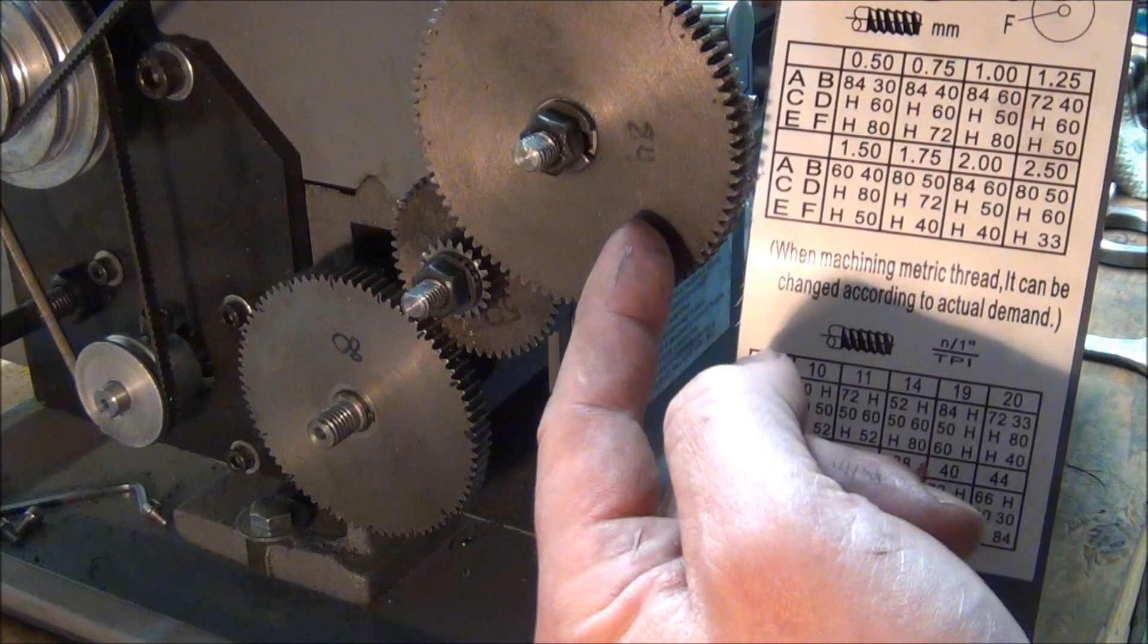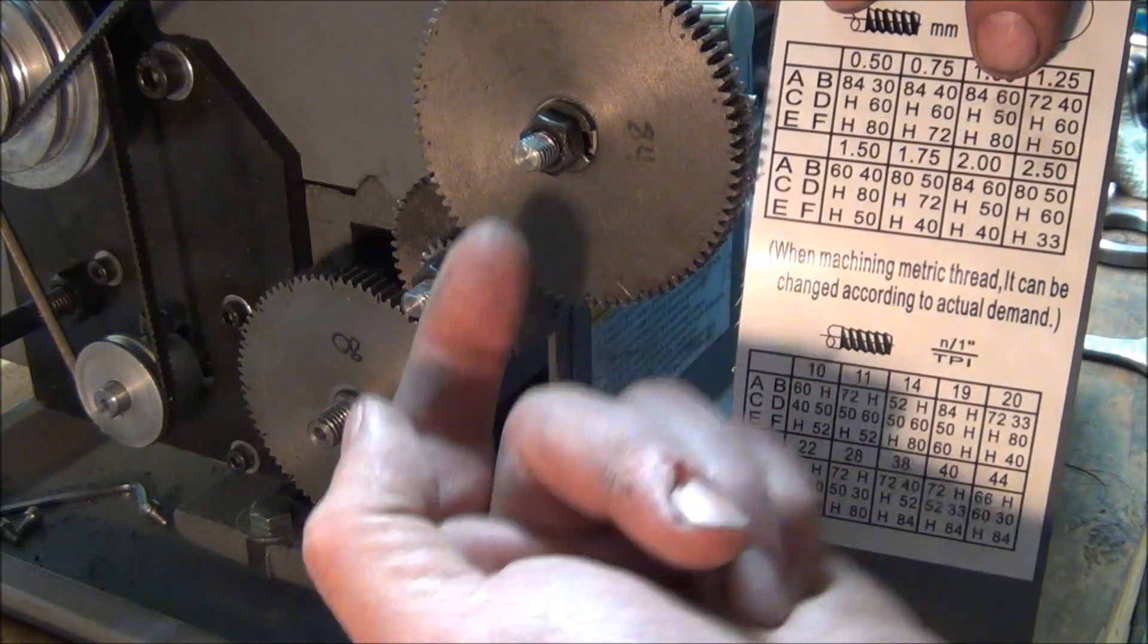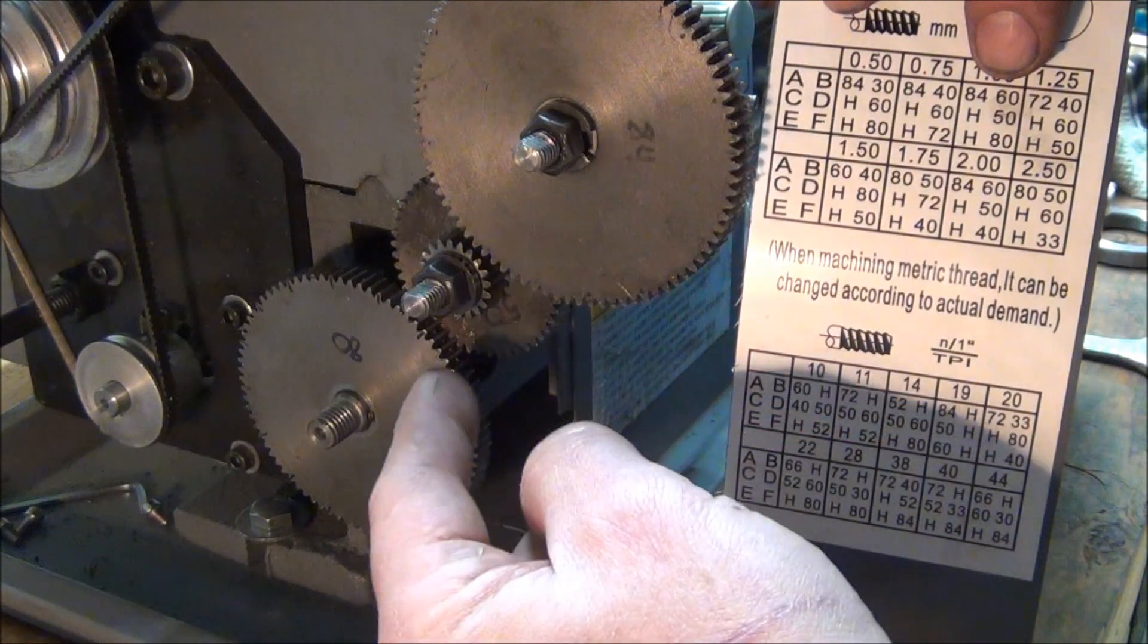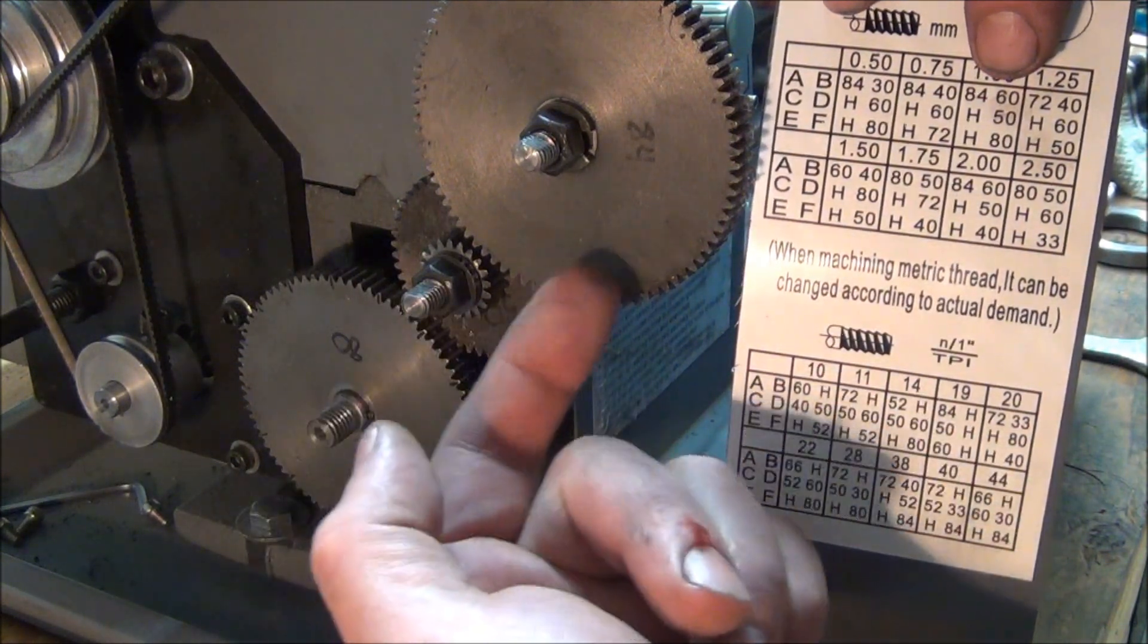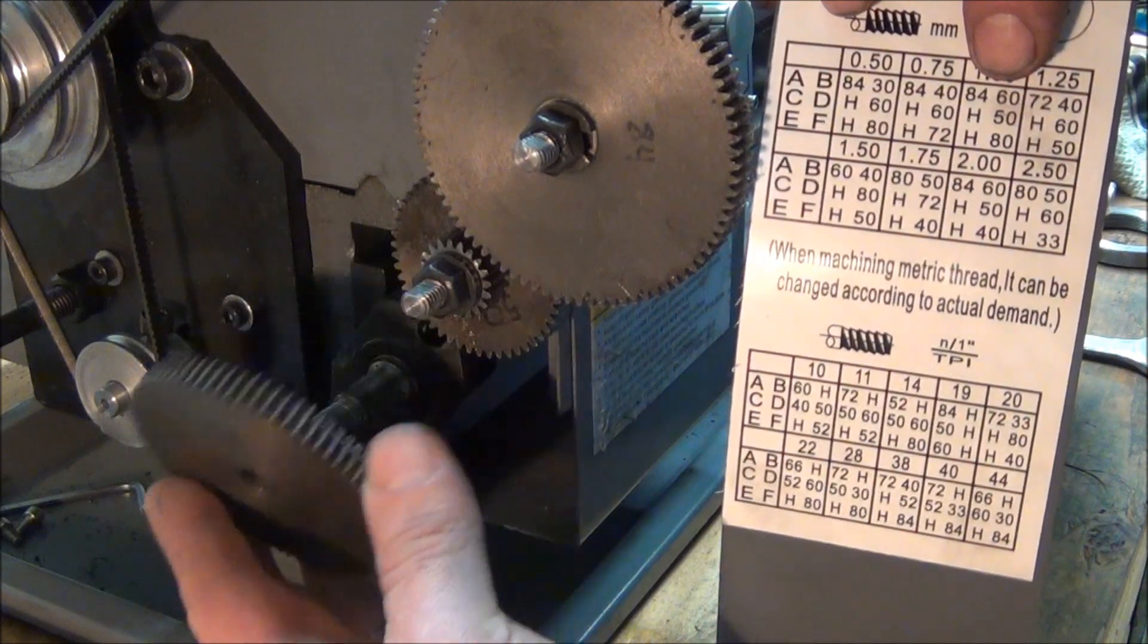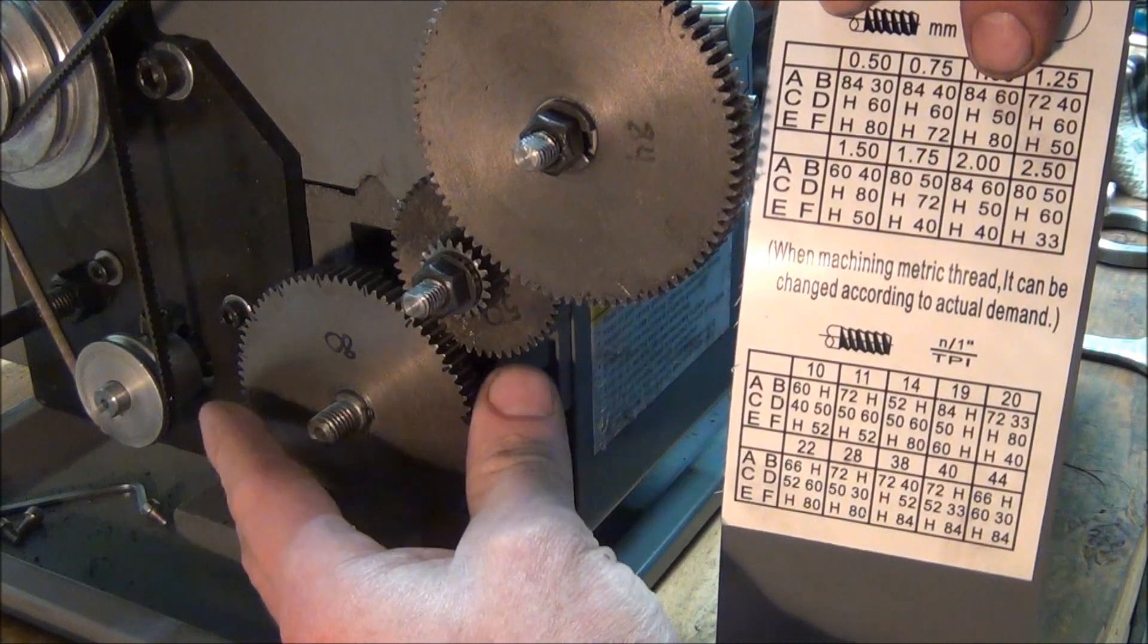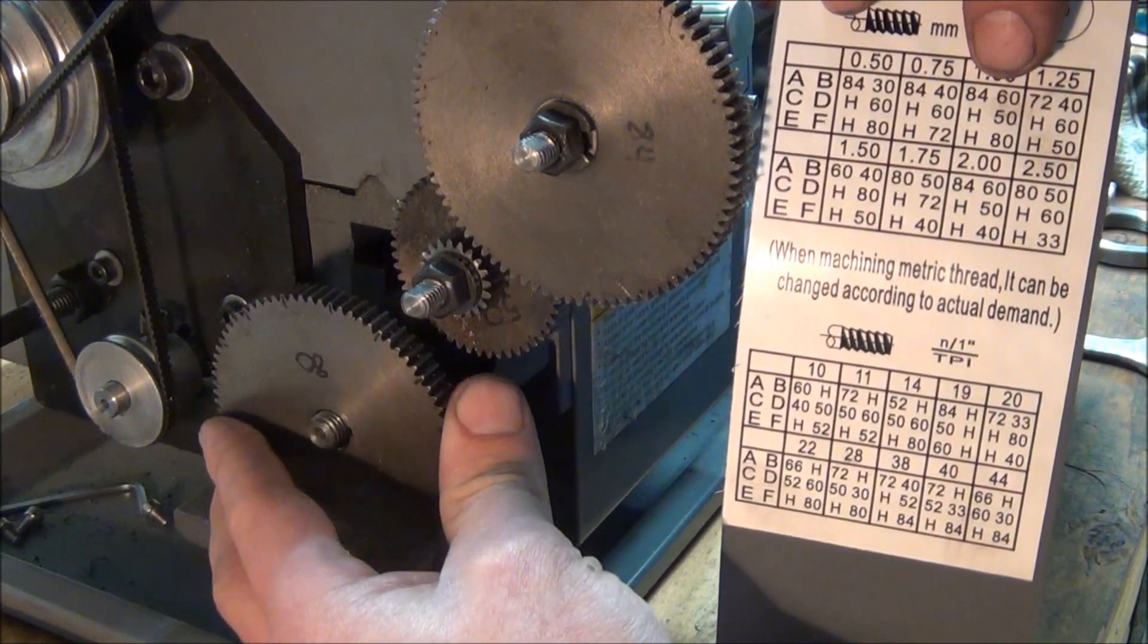Right now I have the 84 gear and 60 gear adjusted as far up as I can. I have the 50 gear adjusted up against the 60 gear. To put the 80 on, well, there's no way in hell it'll go. There's no more adjustment and it's hitting the 50 tooth gear.